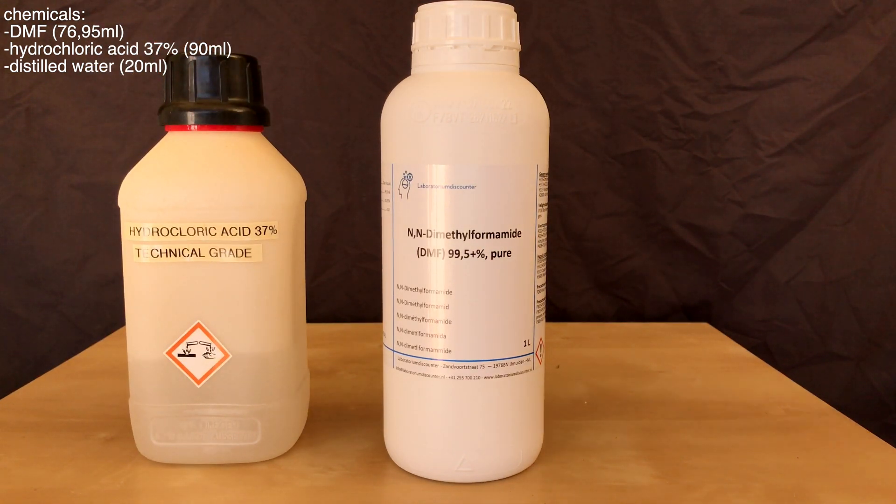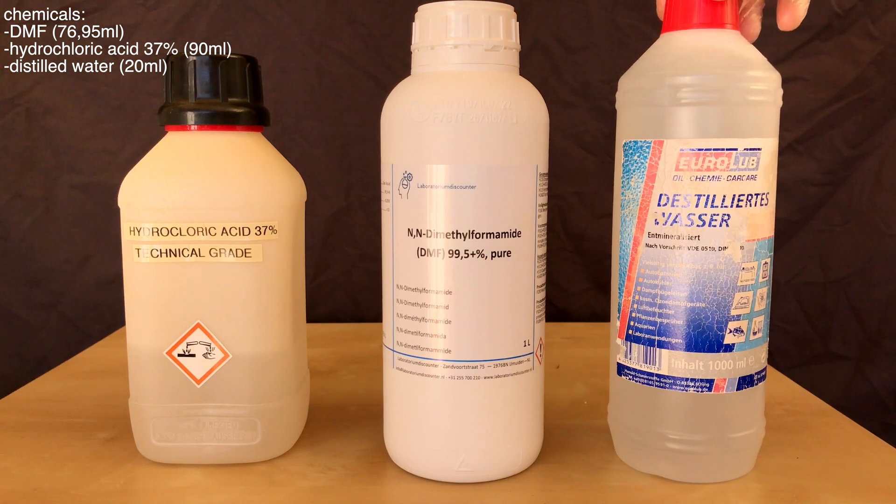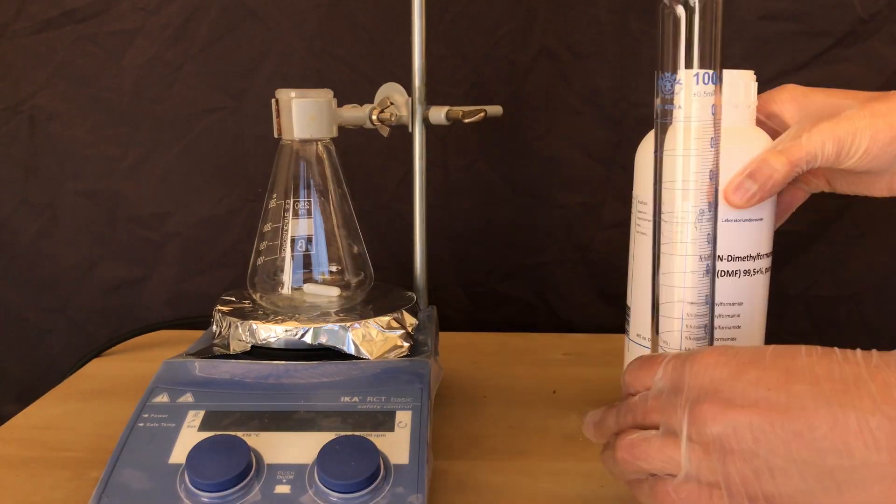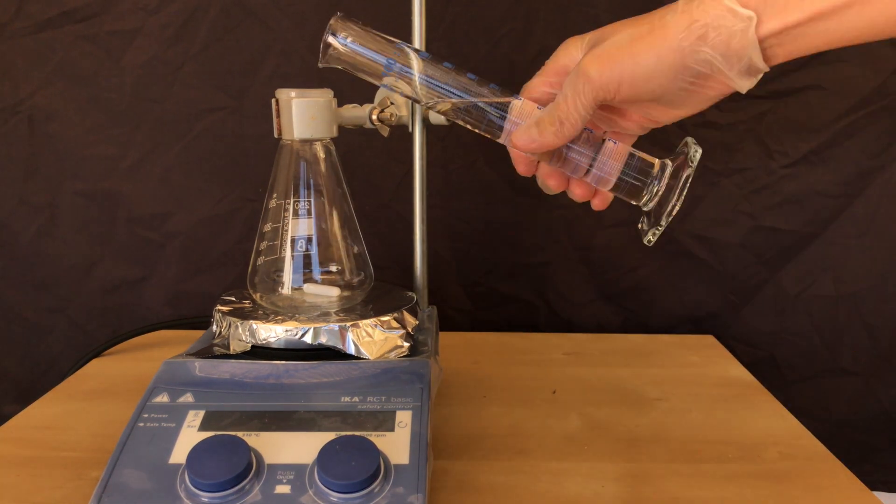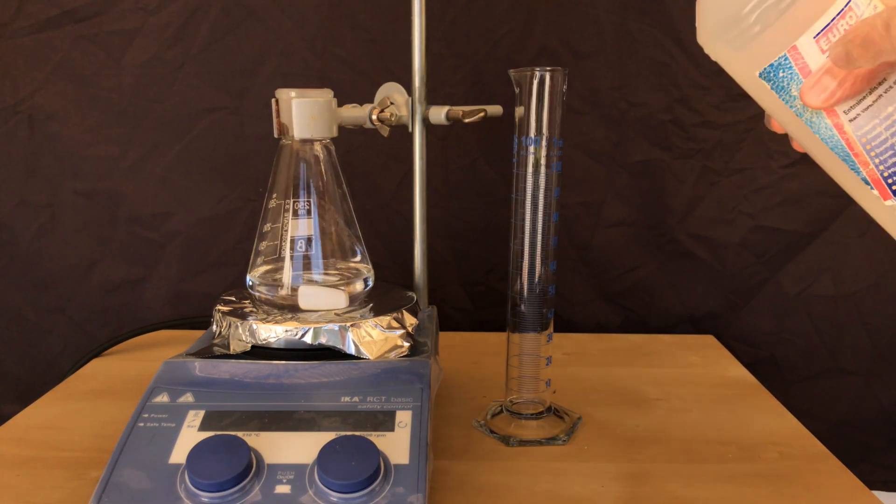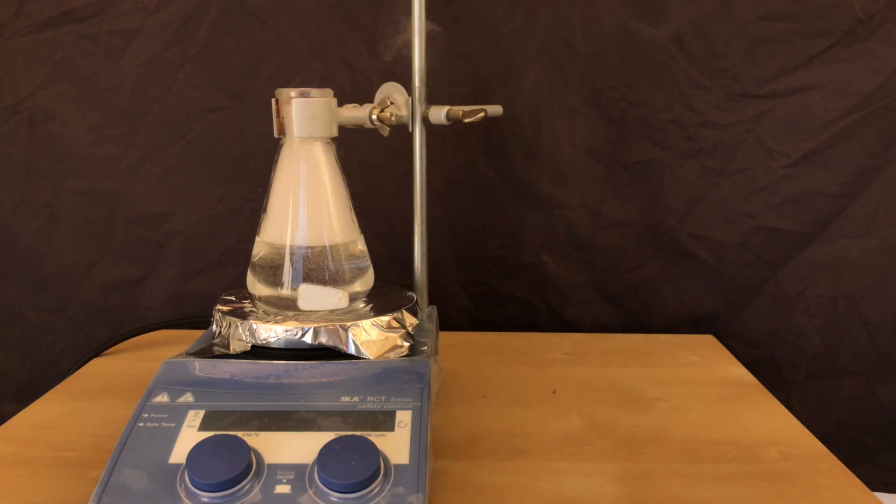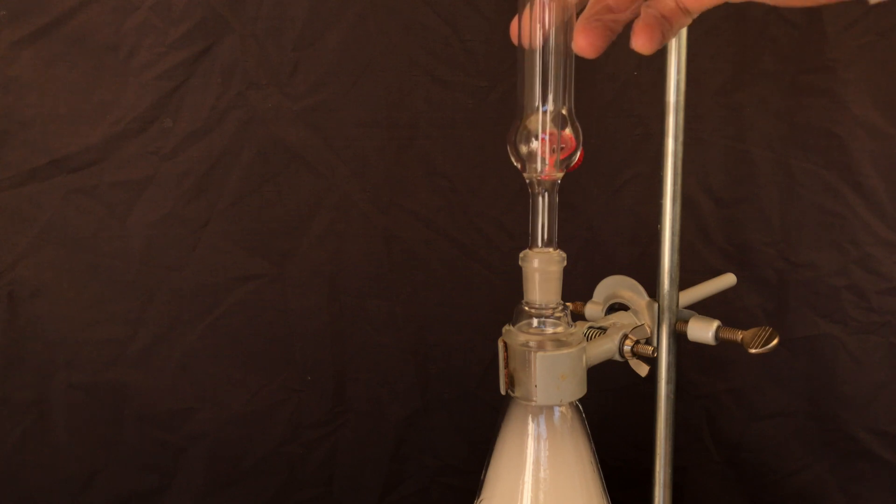This time we used about 77ml of DMF, about 90ml of 37% hydrochloric acid, and 20ml of distilled water. We began by measuring out the DMF and using the same cylinder we measured out the water and the hydrochloric acid. You can see a lot of fumes being produced and this is probably already some of our product.